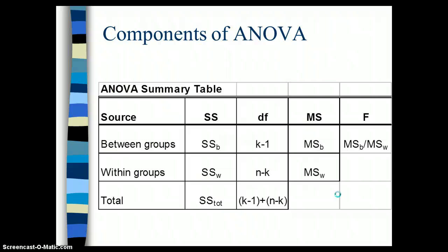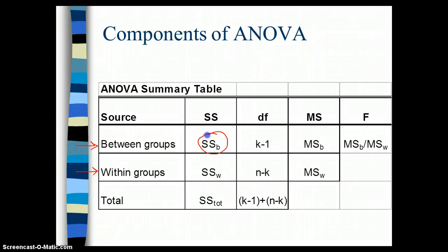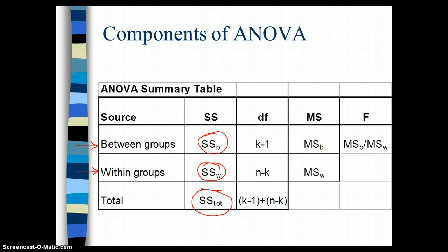ANOVA is really an analysis of variance — an analysis of variation between groups, an analysis of variation within groups — and then we compare those two. When you calculate an ANOVA, this is the kind of information that you get. I have the annotations and symbols here that stand for the numbers that would be in an actual SPSS output. We have the sum of squared differences between groups, the sum of squared differences within groups, and then the total sum of squares, which is calculated in a pretty straightforward way.